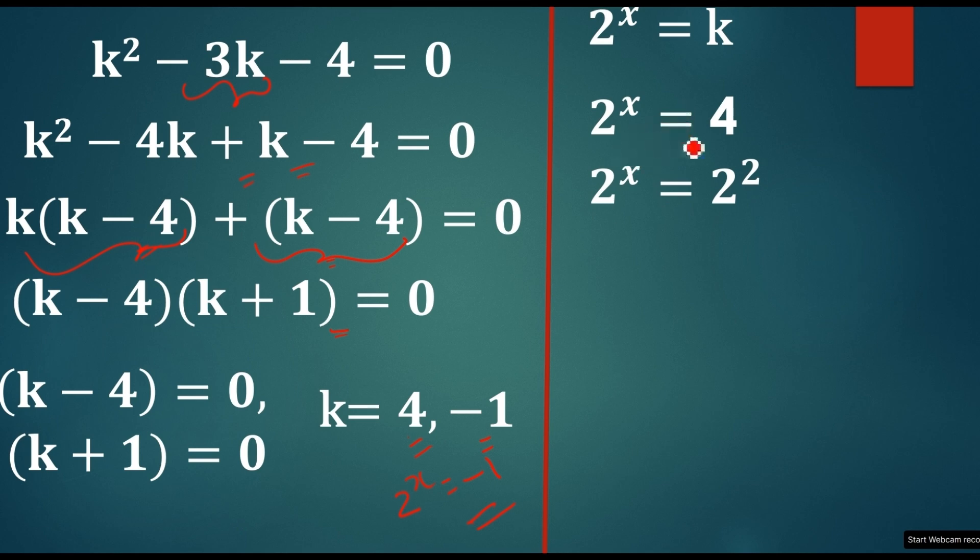So, let's take k is equal to 4. So, 2^x is equal to 4 now, right? So, 2^x is equal to, we can write as 2^2, right? So, the both bases are same here then the powers also will be the same. So, here x is equal to 2.